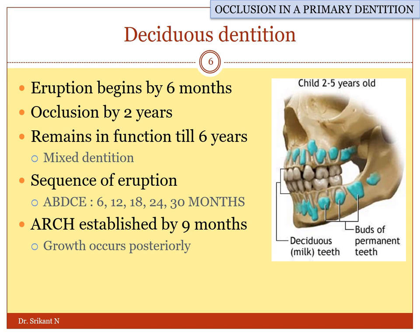These deciduous teeth remain in function till the age of six years, where the permanent molar starts erupting. This mixed dentition phase — where the permanent as well as the deciduous teeth are in place — is very crucial for maintenance of the occlusion. The sequence of eruption is A, B, D, C, E, which generally follows the rule of six: by the age of six months, 12 months, 18 months, 24 months, and 30 months. The complete arch is established by nine months of age, where the growth of the jaws begins posteriorly and expands, giving rise to space for the six and seven — the permanent first and second molars.